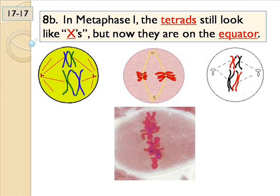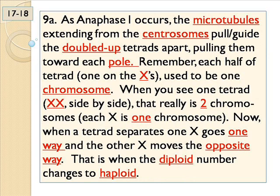Right there is one set of four hooked together — right there is where they're connected. That's a set of four. Just at the very tips they've crossed over. They look like double X's because each leg of the X will one day become a chromosome again. That's still in the first division. Now in anaphase they're pulled apart, just like in mitosis.